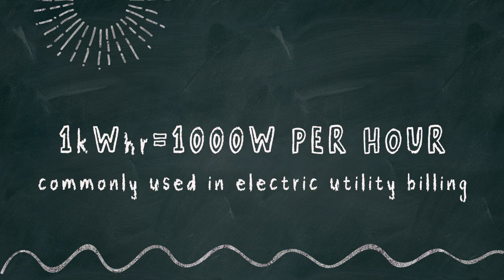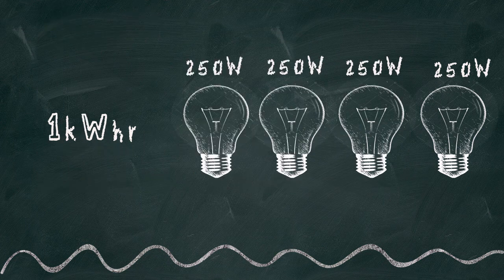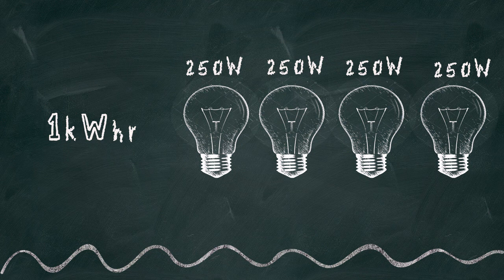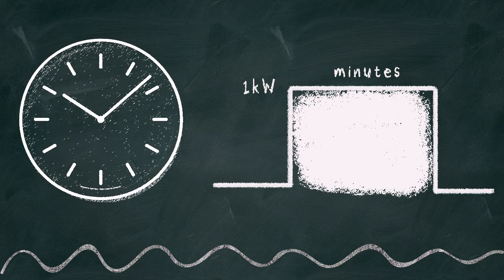This leads us into the next term of the kilowatt hour. The kilowatt hour is 1,000 watts delivered over the span of an hour. Imagine if you turned on a switch to power four 250 watt light bulbs and turned it off 60 minutes later. Over the hour, 1 kilowatt hour of power was used. If you were to graph it, it would look like this.